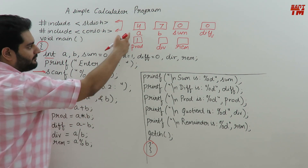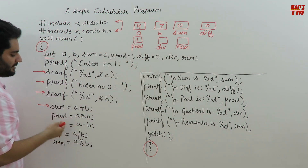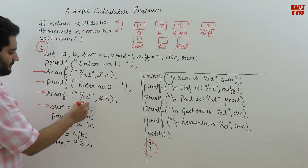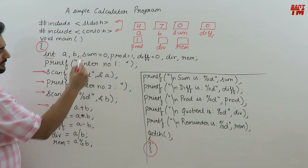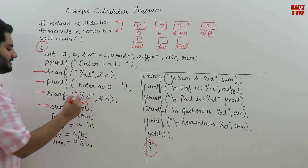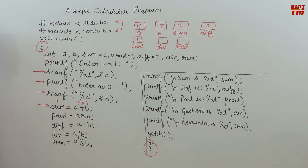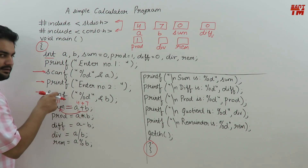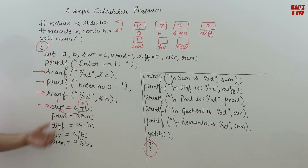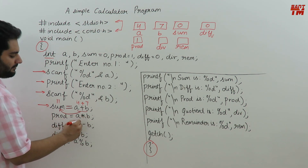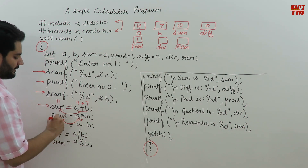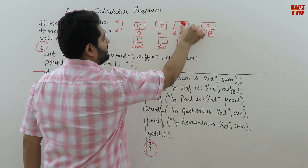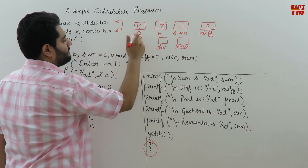We only work with identifiers while doing operations. A is the identifier for one memory location, B for another, and sum for another. A is 4, B is 7, so 4 plus 7 equals 11, which is assigned to sum. The equals sign in C is called the assignment operator, and it works right to left — A plus B is calculated and its result is assigned to sum. Similarly, product: 4 times 7 equals 28, assigned to product. Sum changes from 0 to 11 and product changes from 1 to 28.